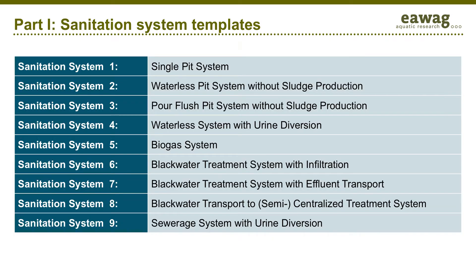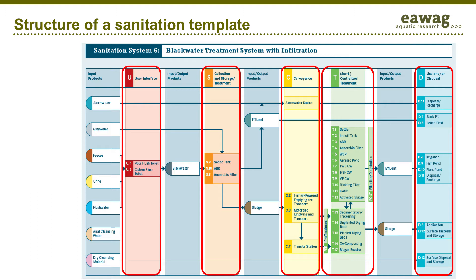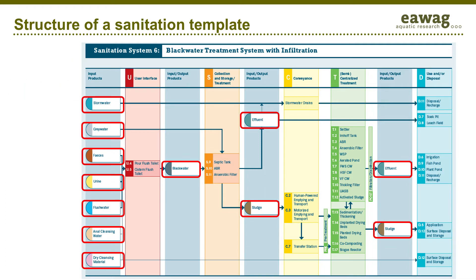In the first part of the compendium, nine common sanitation systems are presented. To understand how the templates work, let's look at one of them: sanitation system template number six, the blackwater treatment system with infiltration. The structure of the template is always the same, with the five color-coded functional groups presented earlier, listing the potential technologies that fit and the products that enter and leave each functional group.